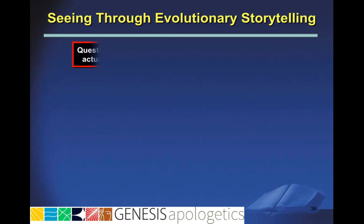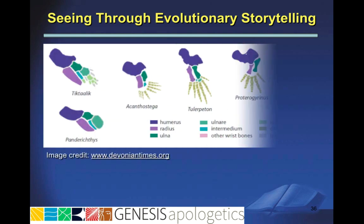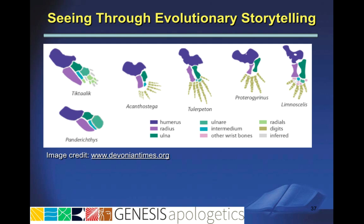The first question we want to ask is: what was actually observed? This enables you to determine what the actual data collected really were. In this case, the data collected are a series of fossils of lobe-finned fish and tetrapods, organisms with four feet.